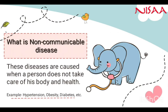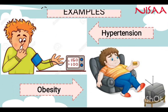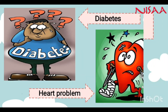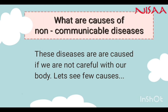The second type of diseases are non-communicable diseases. They are caused when a person does not take care of his body and health. These diseases do not spread from one person to another. The examples of non-communicable diseases are hypertension, obesity, heart problems, and diabetes.